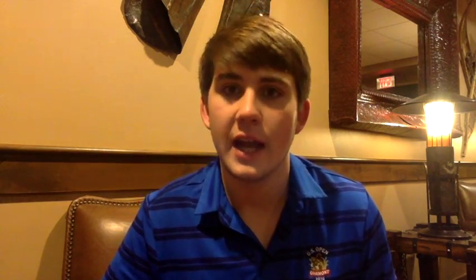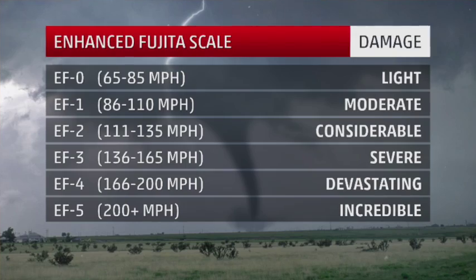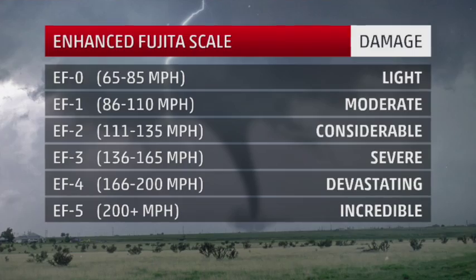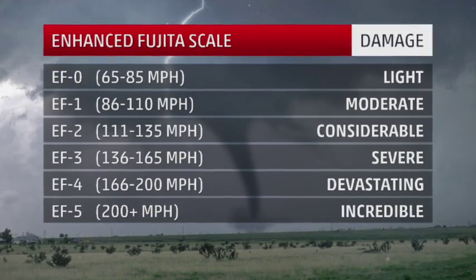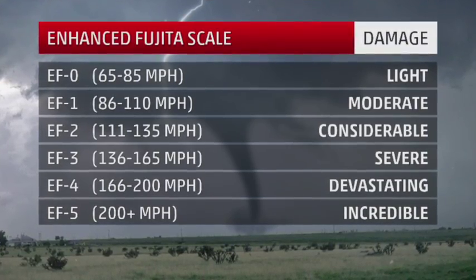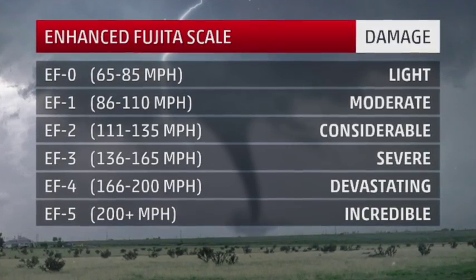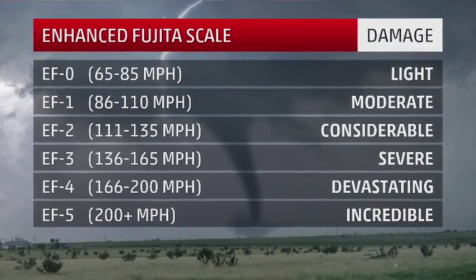You're probably wondering what is this EF thing I just mentioned. The EF is called the Enhanced Fujita Scale. It's spelled Enhanced, and then F-U-J-I-T-A — Fujita.